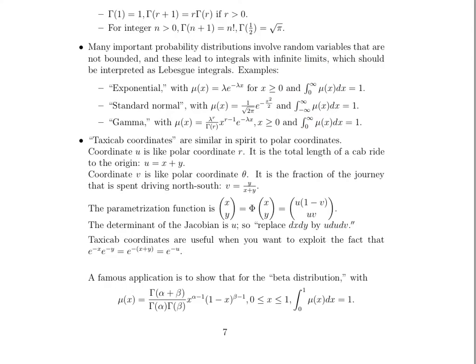Last but not least, we're going to introduce taxicab coordinates. And they're similar in spirit to polar coordinates. We call them taxicab coordinates because they kind of have a nice little parallel to riding in a taxi. Coordinate U is like the polar coordinate R. It's the total length of a cab ride to the origin, so U is equal to X plus Y. And coordinate V is kind of like the polar coordinate theta. Now note that I said kind of like. It's not exactly polar coordinates, hence why it's X plus Y and not the square root of X squared plus Y squared. But you understand. Coordinate V is like polar coordinate theta. It's the fraction of the journey that's spent driving north-south. So when we look at the parametrization function that converts us from X, Y to X in terms of U and V and Y in terms of U and V, here's what it looks like. And the determinant of the Jacobian is U. So we will have to substitute DX, DY with U, DU, DV.